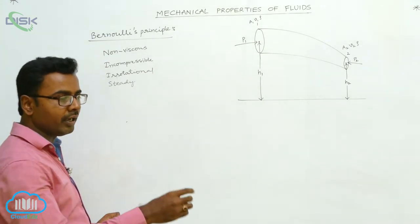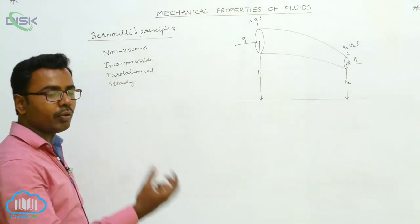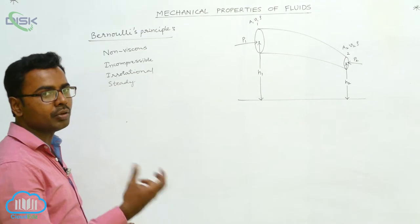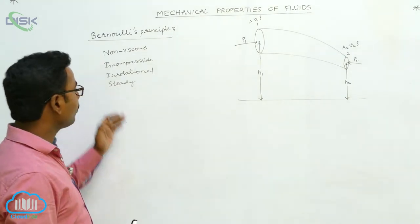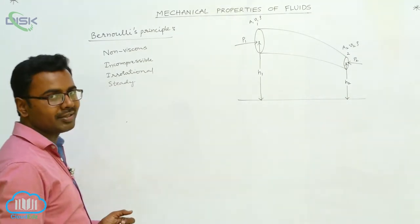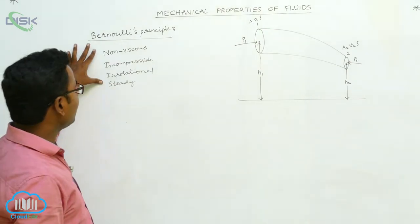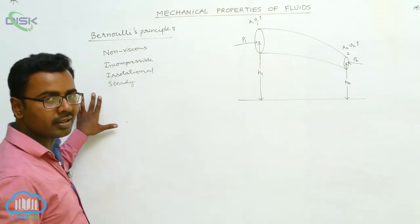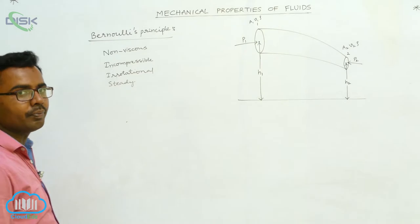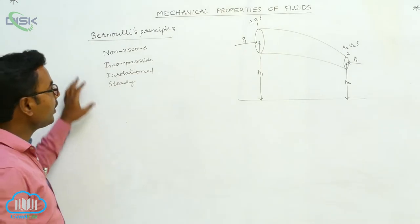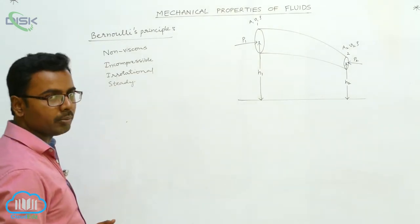As the fluid is flowing at any point, the rotation should be zero — it cannot rotate — and the fluid flow should be steady. Whenever the fluid has these four characteristics, it is said to be an ideal fluid. The Bernoulli's principle is applicable only for steady ideal fluid flow.